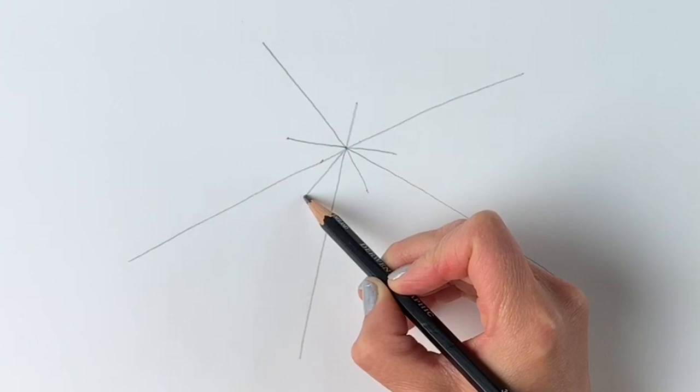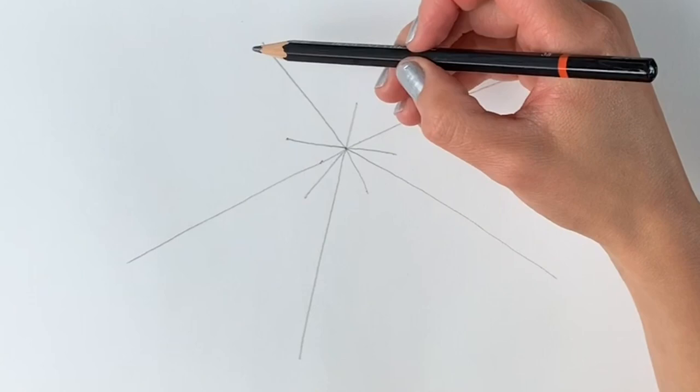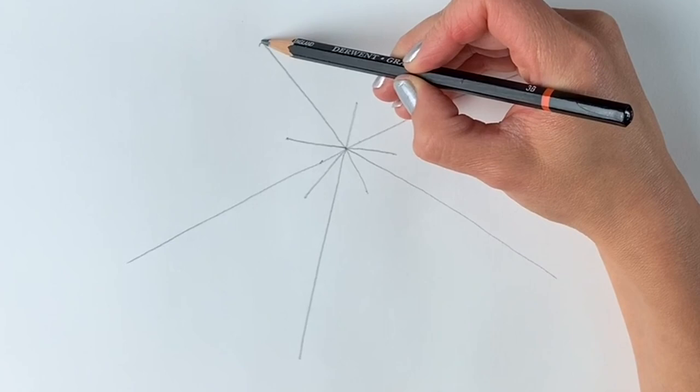Now we're going to join up all the ends of these lines. So from the top of this one just draw a rounded top and come down. Remember not to press too hard. We're going to go over it again.